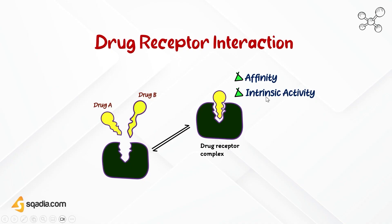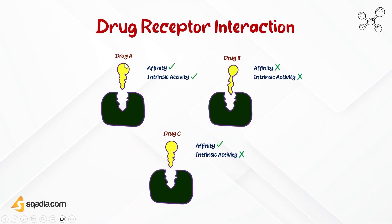Intrinsic activity, also known as efficacy, is the capacity of a drug to produce an action upon binding with the receptor. If a drug binds with the receptor and produces a desired action, it has intrinsic activity. But if a drug lacks intrinsic activity, it will not produce any action on the receptor.